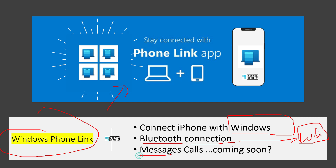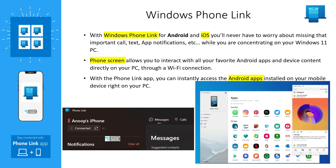The basic features like sending a text message, receiving a text message notification, and making a call are all available for iOS devices. It is only available for insiders at the moment, but you can get the latest information in the description of the video. With Windows Phone Link for Android and iOS, you will never have to worry about missing that important call, text, or app notifications while you are concentrating on your Windows 11 PC.